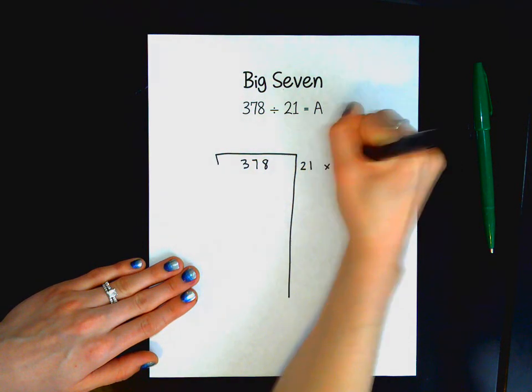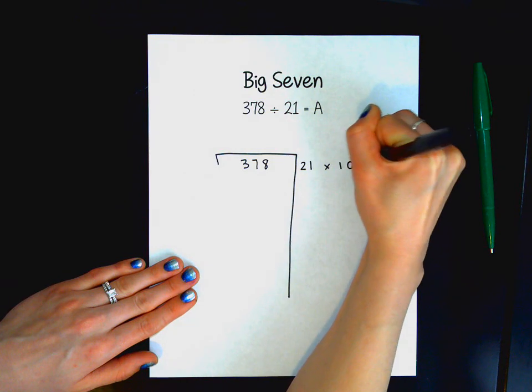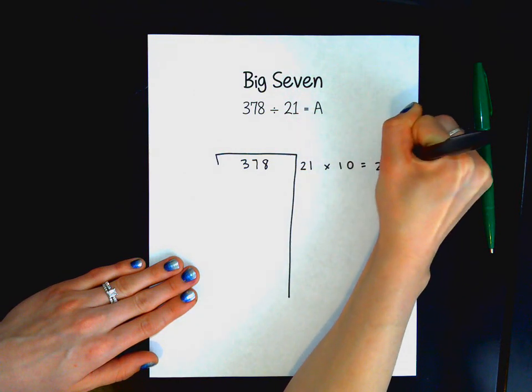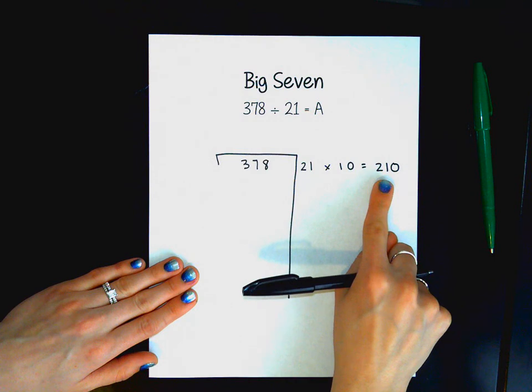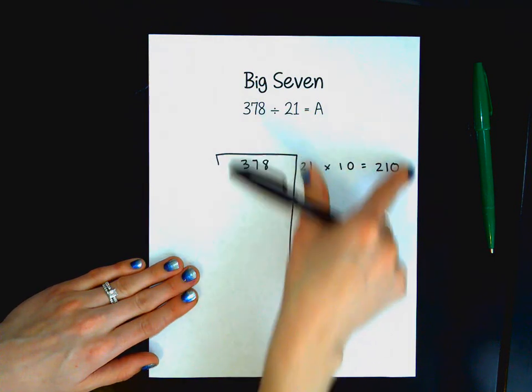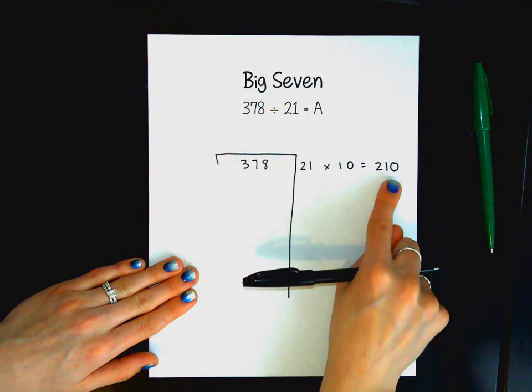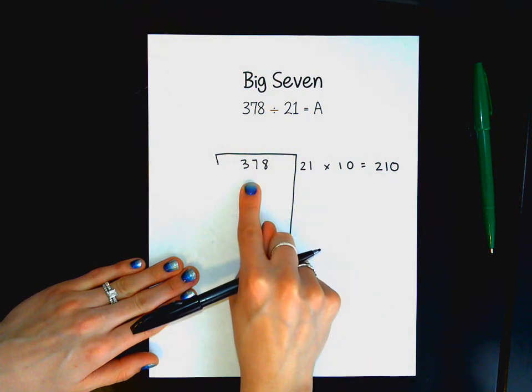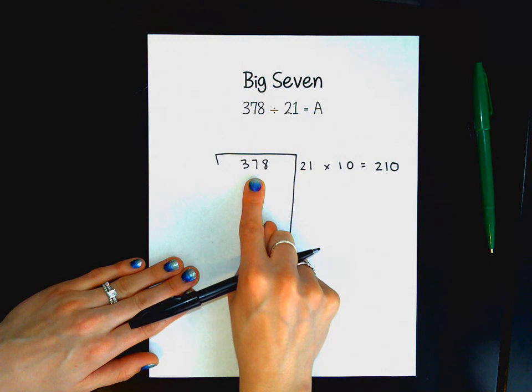So I'm going to start with 21 times 10. The reason why I'm going to do that is because I know that product will be 210, which is smaller than 378. So every time I'm multiplying over here, my product needs to be smaller than what I have left in the center and I am going until I get this number down to zero.